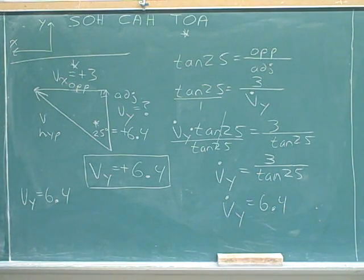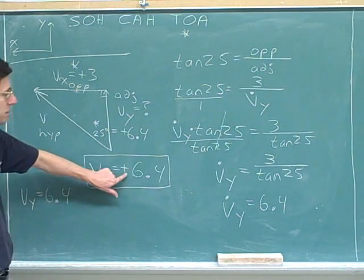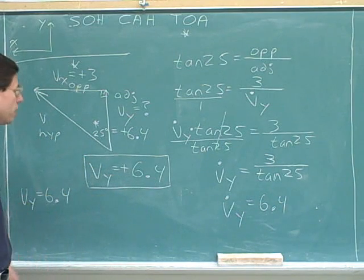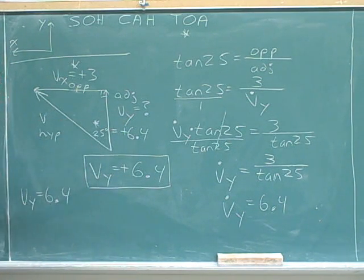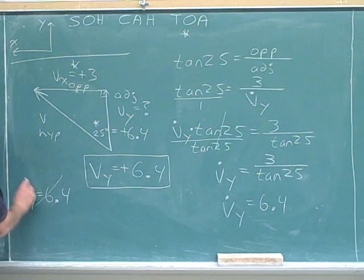I suspect there may be some people out there who wrote that this was the answer. If you're one of these people, then you got the problem wrong. This is not the answer. V_y is not 6.4. V_y is positive 6.4. V_y is a signed component. So we've got to indicate the sign. And we have to indicate the signs not just in front of negative numbers but also in front of positive numbers. So this would be wrong.